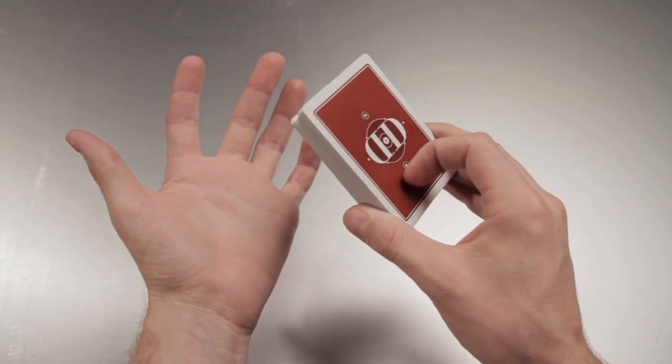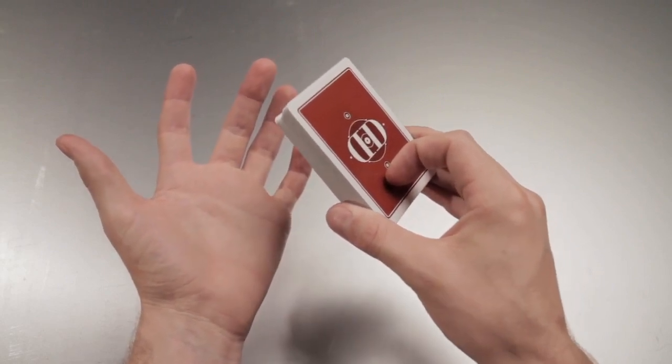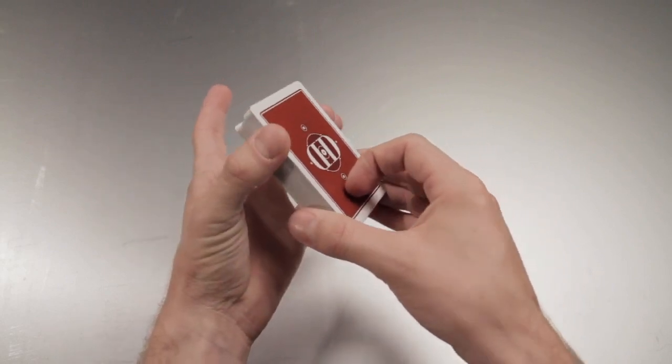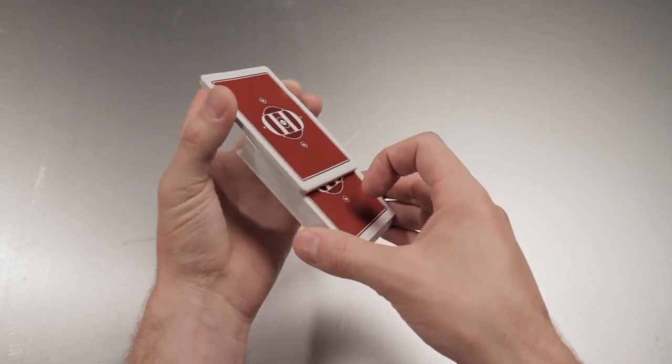You're now going to use your left hand to strip off packets of the cards. You use your thumb and middle finger to do so near the outer end of the deck.